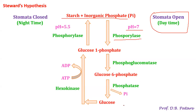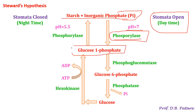In the process of breakdown of starch into glucose, phosphorylase is involved in the addition of a phosphate group. The inorganic phosphate group, that is PO4 minus, is added to each glucose unit. This results in the formation of an intermediate compound called glucose-1-phosphate.